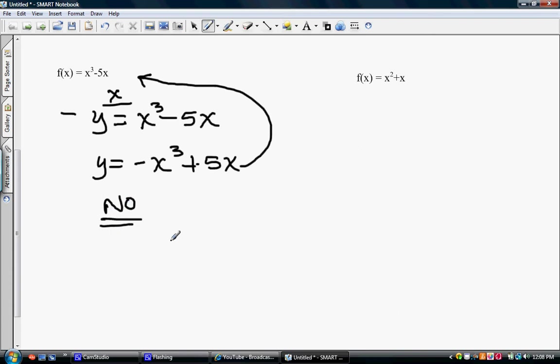Now we're going to do the test with respect to the y-axis. So for the y-axis, we change all the x's. So we're going to change the x's. So we have negative x cubed minus 5 times negative x.